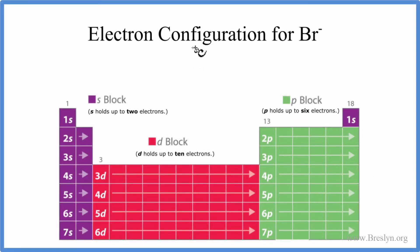In this video, we'll write the electron configuration for Br⁻, that's the bromide ion. Before we do that, we should write the electron configuration just for neutral bromine, as it's found on the periodic table.